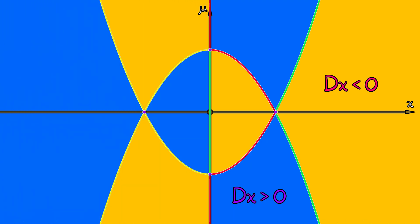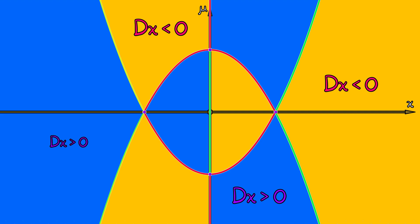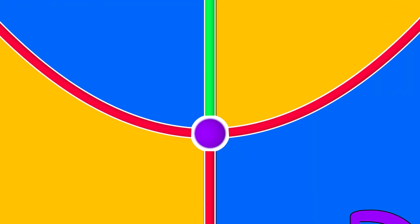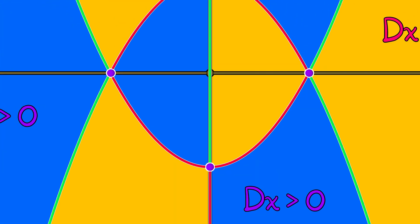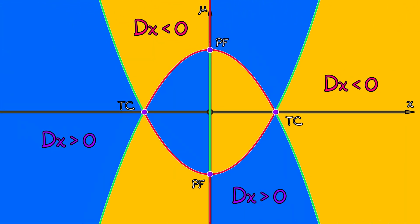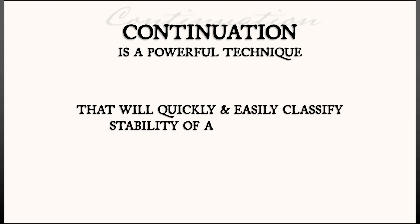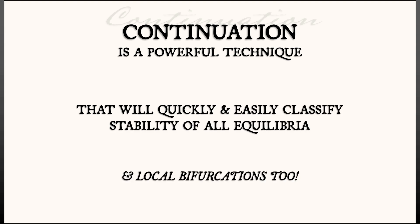Now I can look and see what types of bifurcations I have. Zooming in — it looks like we have some pitchfork bifurcations. And not just that: we can say exactly whether they're supercritical or subcritical based on the stabilities we have inferred. This method of continuation is a powerful technique for classifying the stability of equilibria and bifurcations thereof.